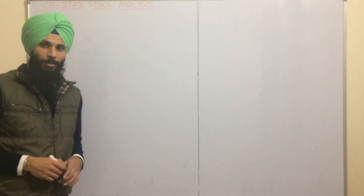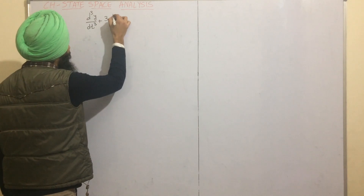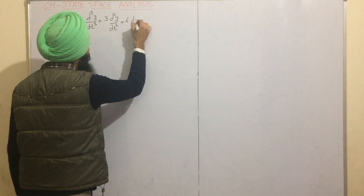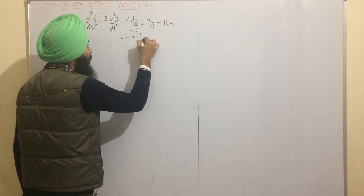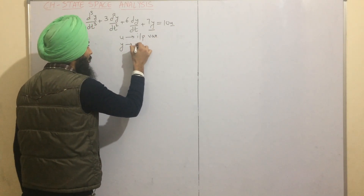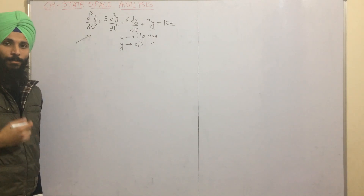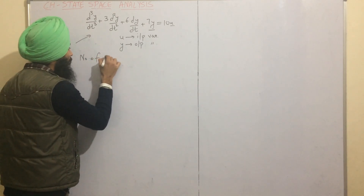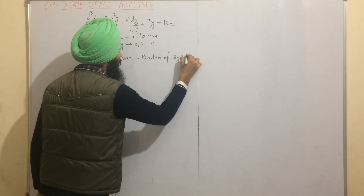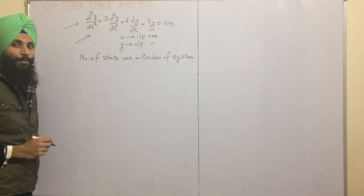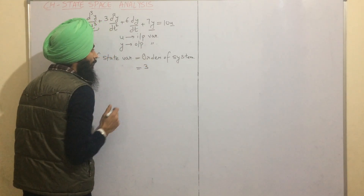If our system is represented using a differential equation of this form: d³y/dt³ + 3·d²y/dt² + 6·dy/dt + 7y = 10u, where u is the input variable and y is the output variable, we need to identify the number of state variables. The number of state variables equals the order of the system, which equals the highest order derivative — here that is 3, so the order of the system is 3.